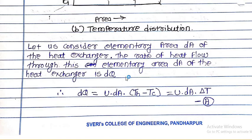Let us consider the elemental area dA of the heat exchanger. The rate of heat flow through this elementary area dA is dQ, which can be written as: dQ = U × dA × (T_H − T_C), where U is the overall heat transfer coefficient, dA is the elementary area, and (T_H − T_C) is the temperature difference between hot and cold fluid at that point. This is equation (A).